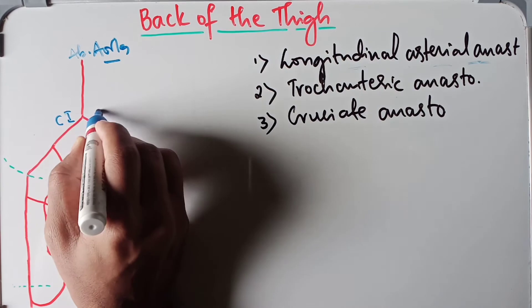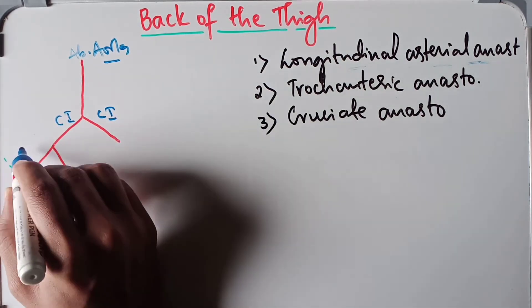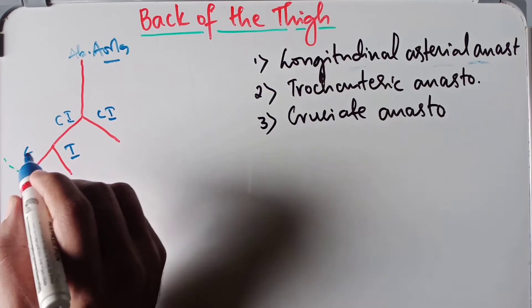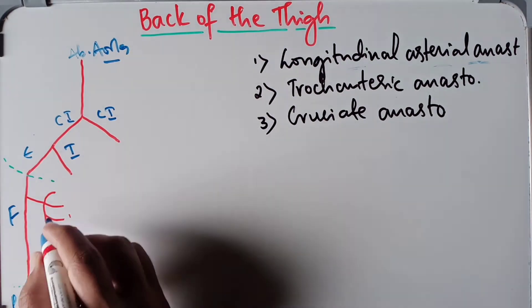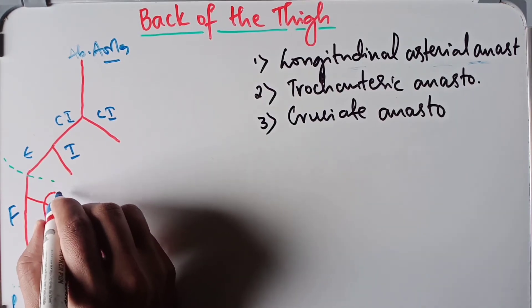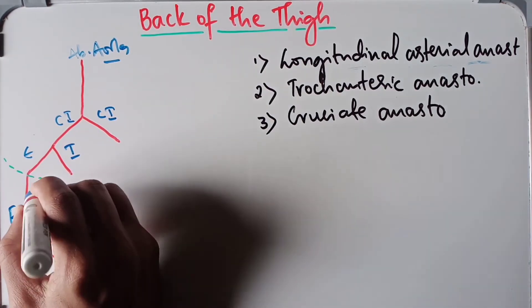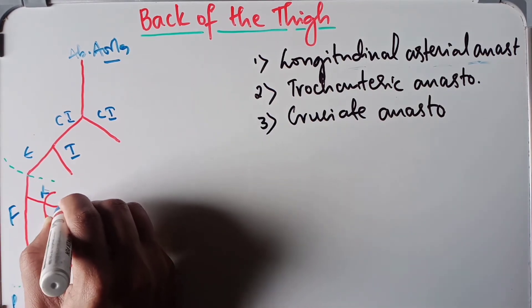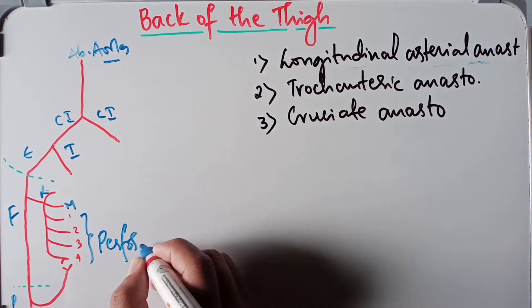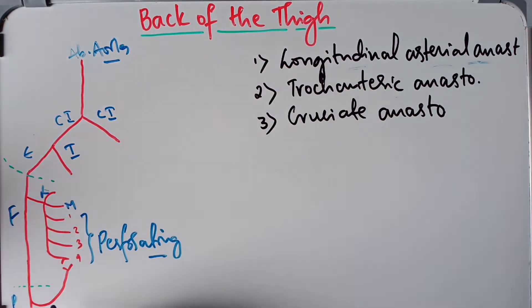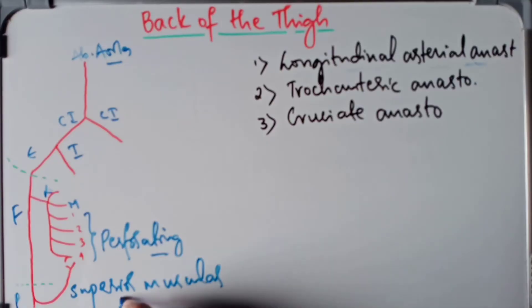We have the common iliac arteries — right and left — divided into the external iliac artery and the internal iliac artery. It continues down as the femoral artery and then as the popliteal artery. This gives the lateral circumflex femoral artery, the medial circumflex femoral artery, the four perforating arteries, and the superior muscular branch of the popliteal artery.